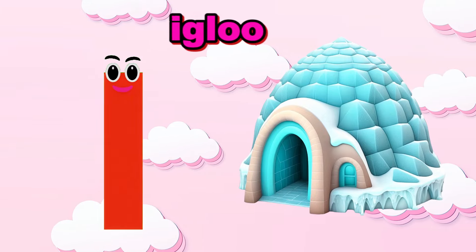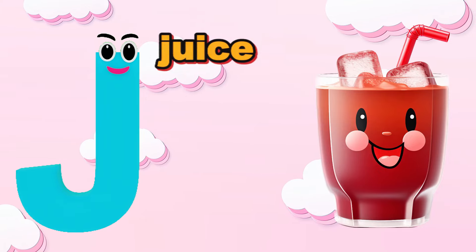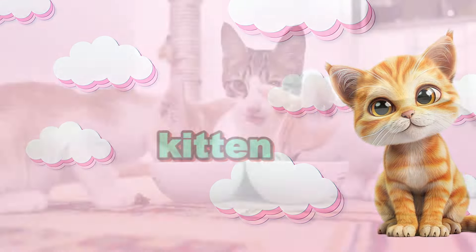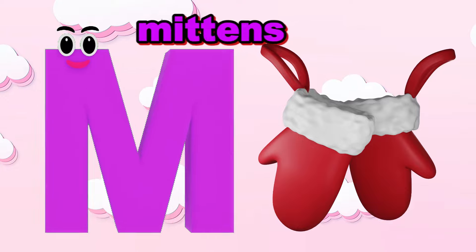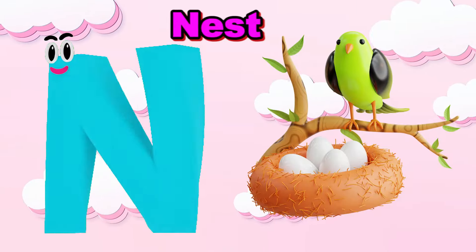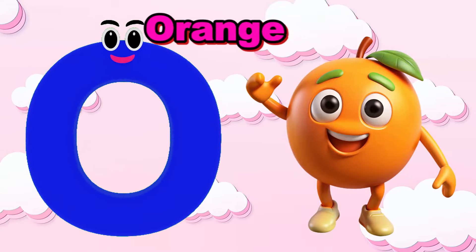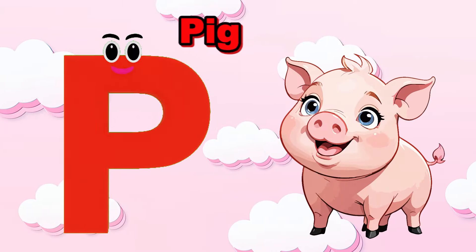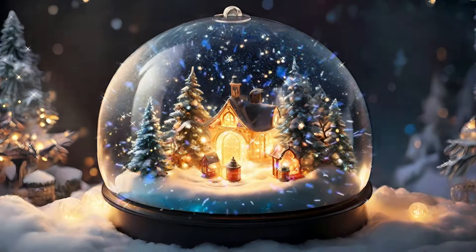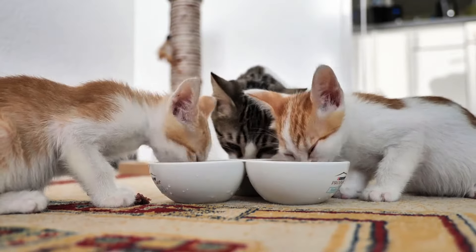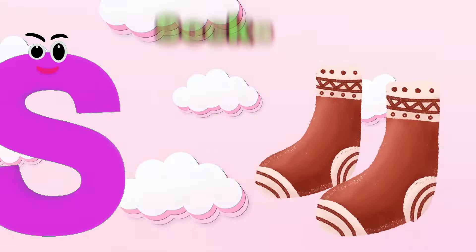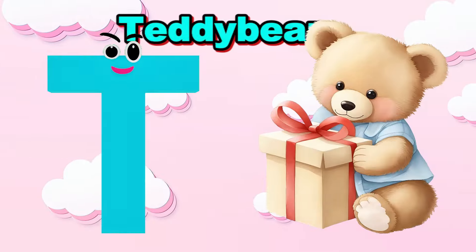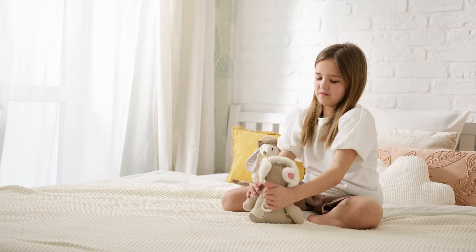I is for Igloo. a-a-a-a-a-igloo. J is for Juice. j-j-j-juice. K is for Kitten. k-k-k-k-kitten. L is for Lemon. l-l-l-lemon. M is for Mittens. m-m-m-m-mittens. N is for Nest. n-n-nest. O is for Orange. a-a-o-o-orange. P is for Pig. a-a-a-pig. Q is for Queen. c-c-c-c-queen. R is for Ring. r-r-r-ring. S is for Socks. s-s-s-socks. T is for Teddy Bear. t-t-teddy bear.